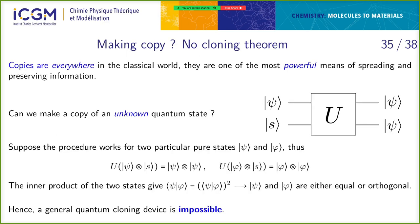Now about copying: in classical computing, we can copy a state — we just add a wire, and it's very powerful. But for a quantum state it's not possible. Imagine you have a state psi and a state s. You want s to become psi while you keep psi — that's a copy, not just teleportation. Teleportation we know we have, but copying is different.